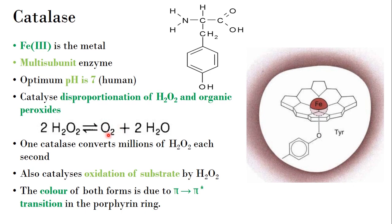One molecule of oxygen and two molecules of water are produced. Catalase can also catalyze the oxidation of various substrates, where hydrogen peroxide acts as the oxidizing agent. It can oxidize any substrate, and this enzyme catalyzes that process.